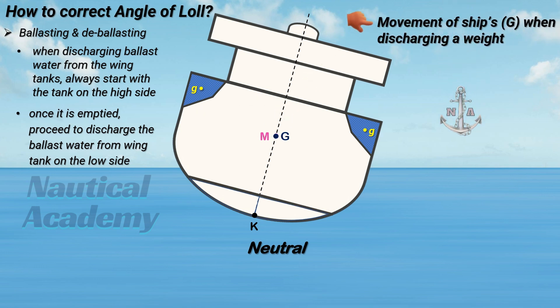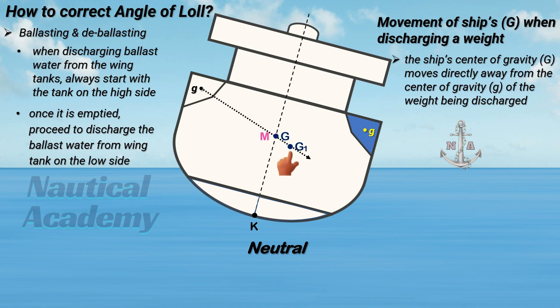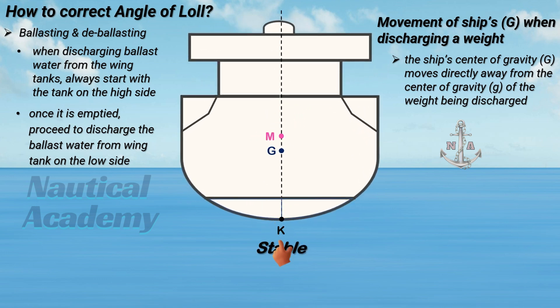Take note of the movement of ship's G when discharging a weight on board. The ship's center of gravity moves directly away from the center of gravity of the weight being discharged. So if the ballast water has been discharged, the ship's G moves in the direction away from small G — the movement is from capital G to G1. At this moment, the new position of ship's G is off the centerline, which means that the ship's inclination will increase. But as soon as the wing tank on the low side is emptied, the ship's G will go back to centerline. If we successfully bring the ship's G below the metacenter, the ship will go back to an upright position and the ship is in stable condition.